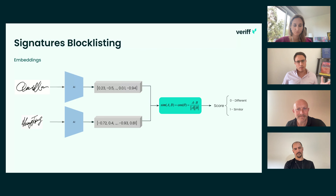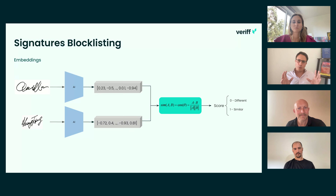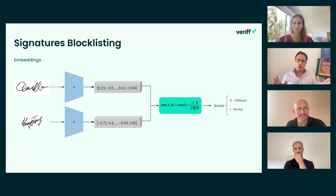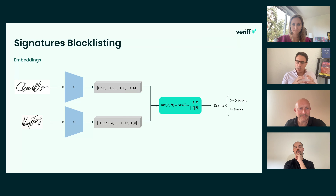How can an AI model tell if two signatures are the same? You take a signature and compare it with a signature you know is fraudulent — for AI that's not trivial. But we have something called embeddings. In plain English, an embedding is just an array of floating-point numbers. The AI compresses a signature image into that array, and then you can compute a smart operation between two arrays — for example, computing the cosine similarity between those two vectors. That operation gives an output from zero, meaning the two signatures are quite different, to one, meaning they are quite similar.